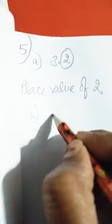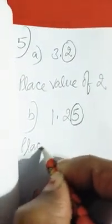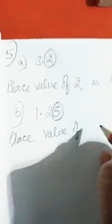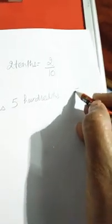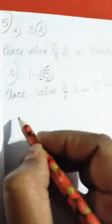Part A: the number is 3.2 and 2 is encircled. Place value of 2 is two tenths, meaning two over ten, because after the decimal the first digit is of tenths. Part B: 1.25 and the encircled digit is 5. Place value of 5 is five hundredths, meaning five over hundred.